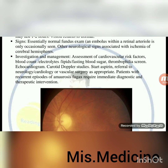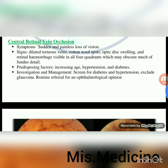Amaurosis fugax is temporary loss of vision in one or both eyes. Central retinal vein occlusion — symptoms: sudden and painless loss of vision. Signs: dilated tortuous veins, cotton wool spots, optic disc swelling, and retinal hemorrhage visible in all four quadrants which may obscure much of fundus detail. Predisposing factors: increasing age, hypertension and diabetes. Investigation: screen for diabetes and hypertension, exclude glaucoma; routine referral for ophthalmological opinion.